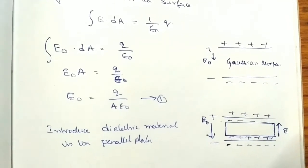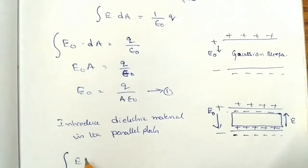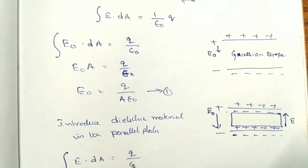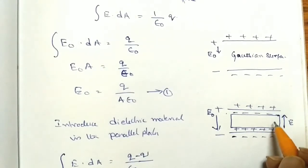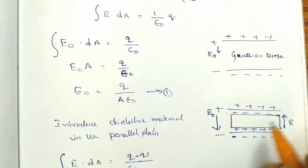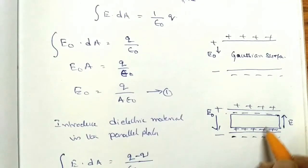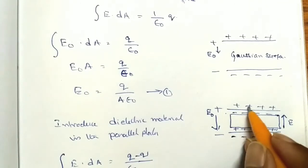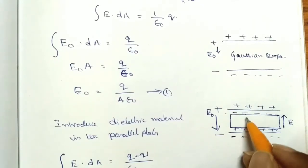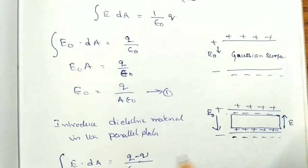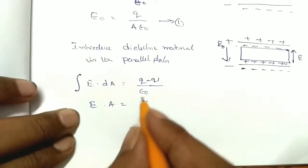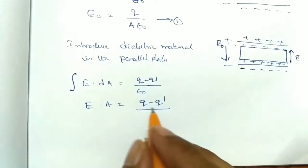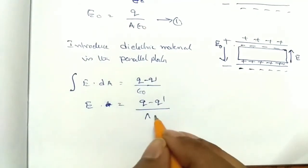Applying Gauss's law again with the dielectric present: E dot dA equals (Q minus Q dash) by epsilon naught, where Q dash is the induced charge generated within the dielectric. The induced charge Q dash flows from the upper surface to the lower surface of the dielectric, opposing the free charge Q. This gives E dot A equals (Q minus Q dash) by epsilon naught. This is equation number 2.